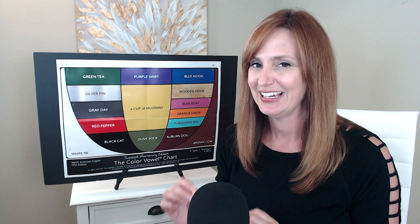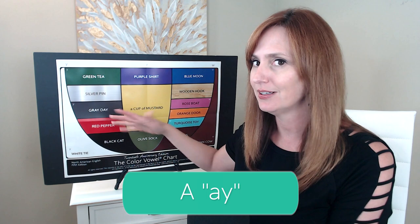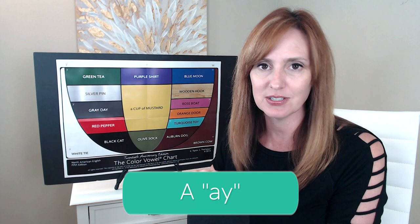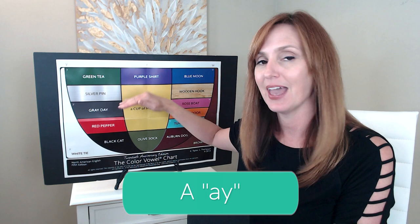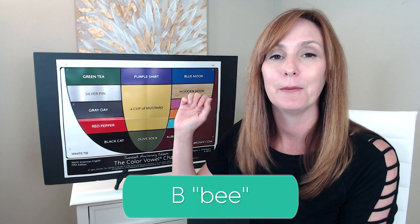Let's dive in with our first letter: A. Gray day A. The name of this letter is just the gray day A vowel all by itself. This vowel is a moving vowel — a diphthong — meaning there are two parts: we start with A and move into the E as in green vowel. Notice how my mouth moves as I say this sound: A. We want to make sure we're getting both parts of that vowel as we say the name of this letter. A. B.